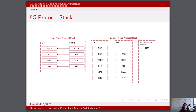Together, the user plane protocol stack and the control plane protocol stack form the complete 5G protocol stack, enabling efficient data transfer, network management, and signaling between the user equipment and the core network. This layered architecture ensures seamless communication, supports a wide range of services, and enables the high-speed, low-latency capabilities that 5G promises to deliver.